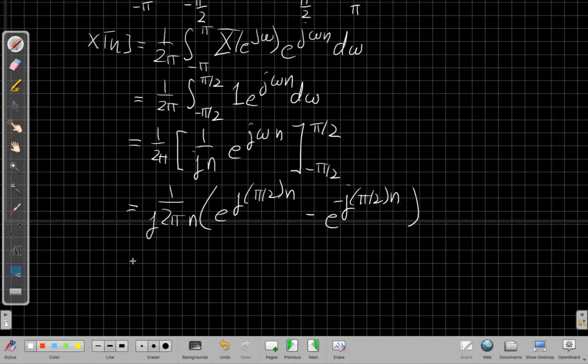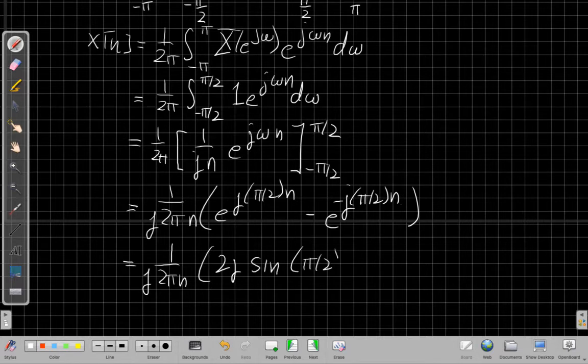That is our old friend from Euler, well, it's an exponential minus an exponential with the opposite sign. It means what I have in the parentheses is 2j times the sine of pi by 2 times n.